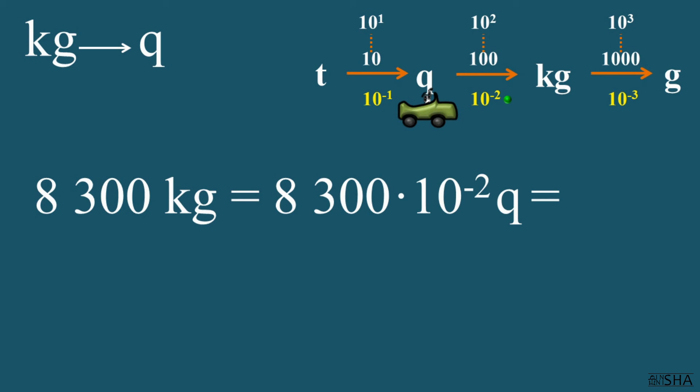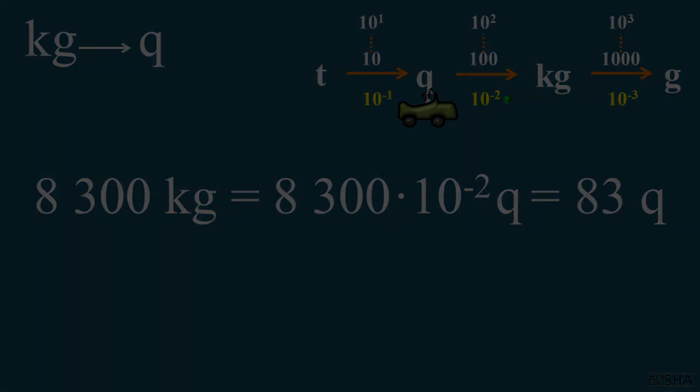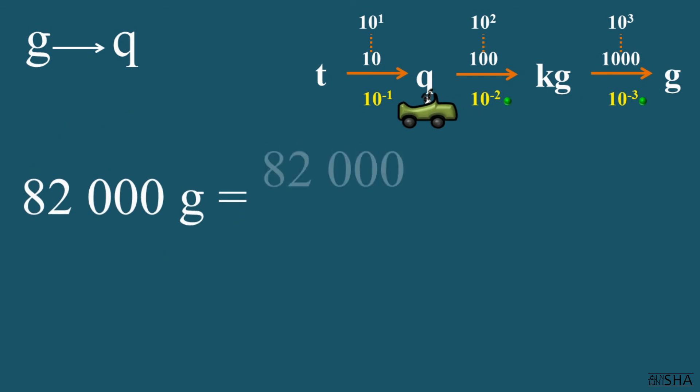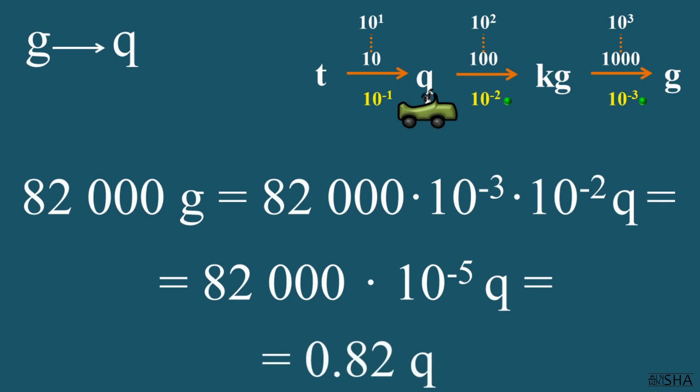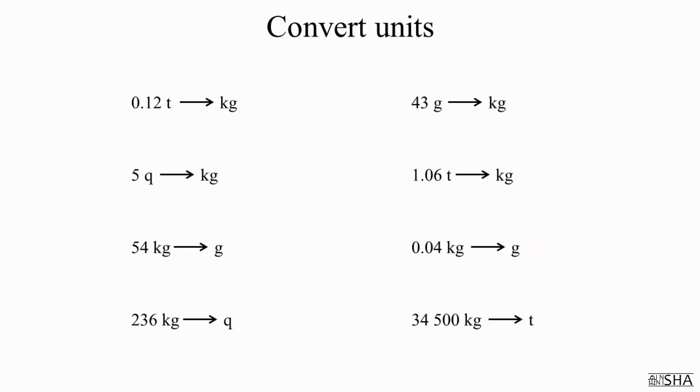82,000 grams are to be converted to metric centenars. Grams should be multiplied by 10 to the negative 3 and by 10 to the negative 2. After some calculations we get the answer 0.82 of a metric centenar. Now try to convert by yourself. The answers as you already know can be found by the link in the description. Good luck. See you in the next episode.